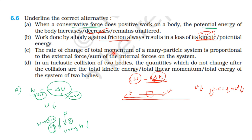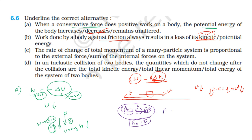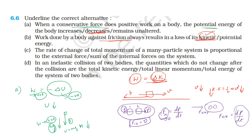The rate of change of total momentum of a particle system is proportional to the external force on the system. Internal forces are equal and opposite, so the total internal force on the system is zero. Therefore, only external forces cause a change in total momentum of the system.